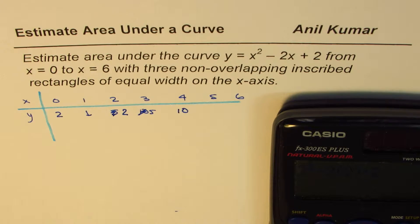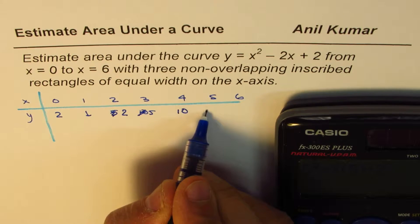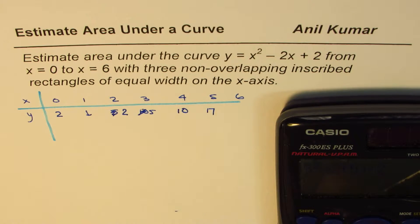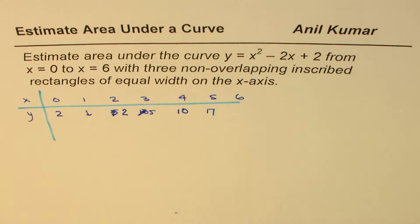Now we'll substitute 5 and 6 and find the answer. So we have 5 equals to 17, and for 6, we get 26.